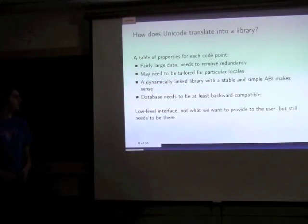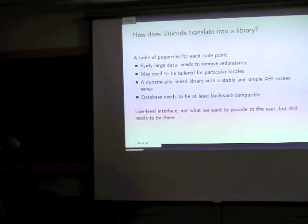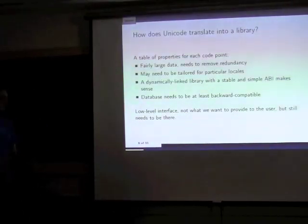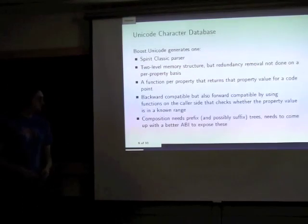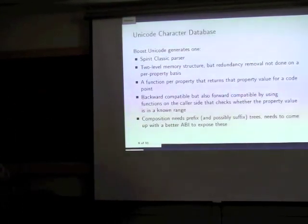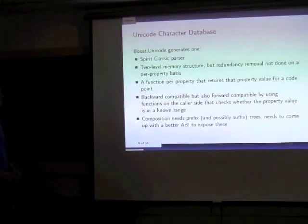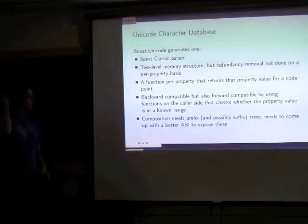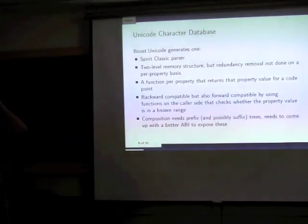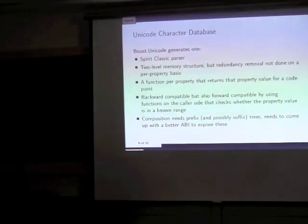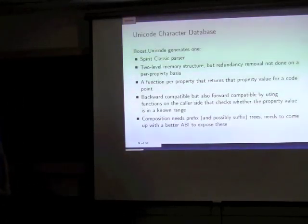Since we have libraries, the interface needs to be at least a flat format: give me a code point and a property, and I'll give you the value. This is very low-level — useful for lookup database purposes, but not the features users want. There is an implementation of such a library as part of Boost Unicode, inherited from prior work. It's a classic parser that fetches all information available on the Unicode website and generates tables used in the library.